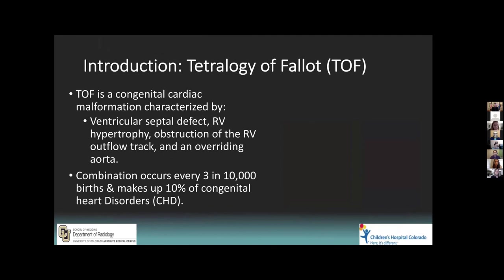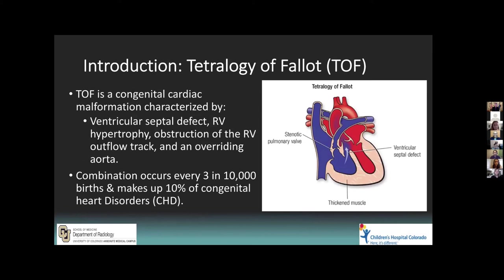It's important to start with what is Tetralogy of Fallot. It's a congenital cardiac malformation characterized by four main things: first, a ventricular septal defect, which allows deoxygenated blood to mix with oxygenated blood between ventricles, followed by an overriding aorta, which comes down more inferiorly during development and takes blood from both ventricles, which is a problem for getting oxygen throughout the body. Then we have a stenotic pulmonary valve here, where the pulmonary outflow tract will shrink and prevent blood from flowing fully. And then the right ventricle makes up for these problems by getting a right ventricular hypertrophy, as you see is this thickened muscle. This combination occurs three in 10,000 births and makes about 10% of congenital heart disorders.